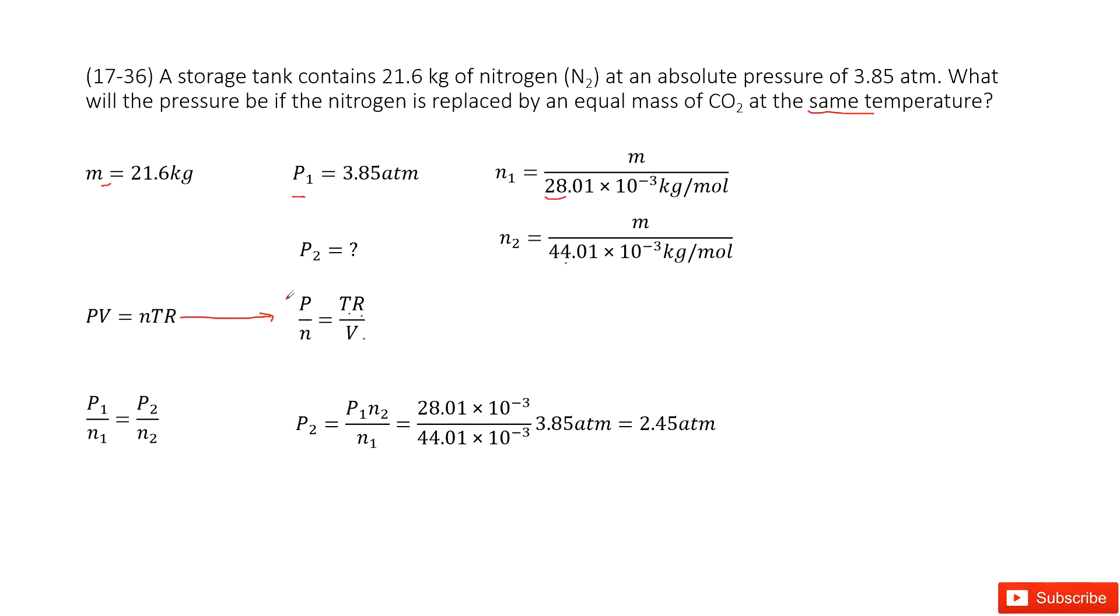So now we can see P over n equals a constant. Therefore, the initial state P1 over N1 equals final state P2 over N2. Right? From this function, we can get the function for P2. You can see P1 times N2 over N1. And this is the ratio N2 over N1. Right?